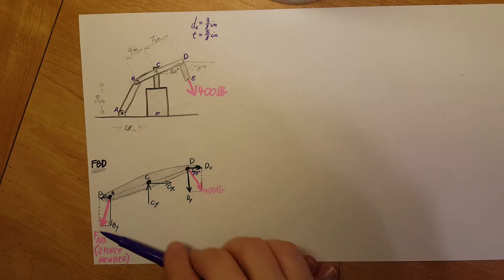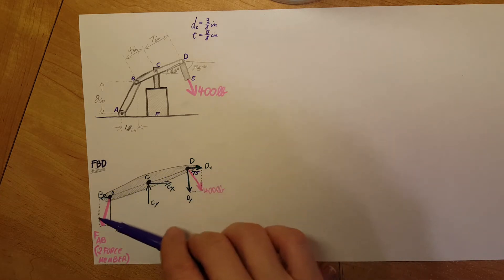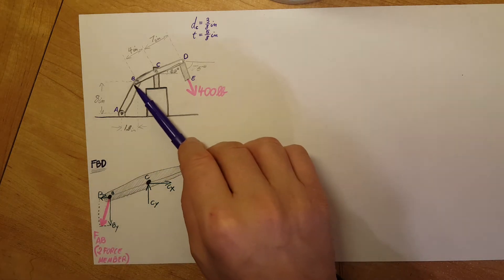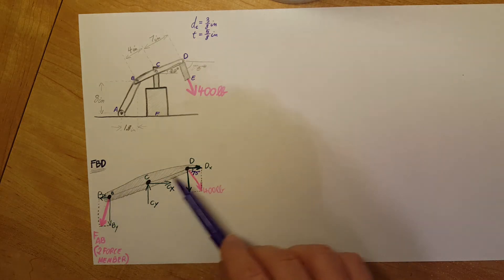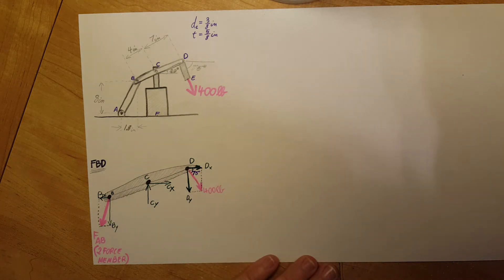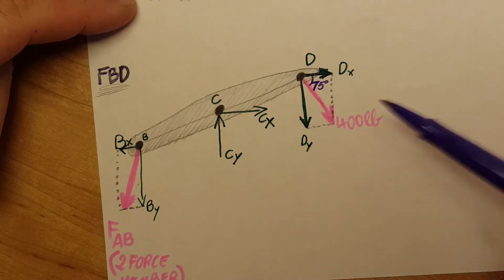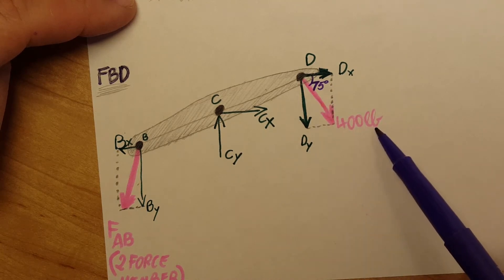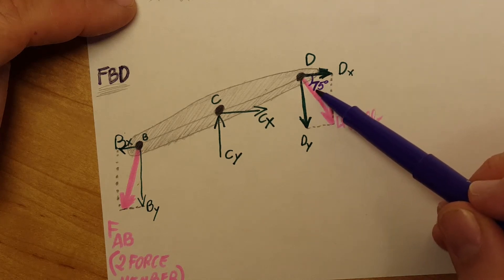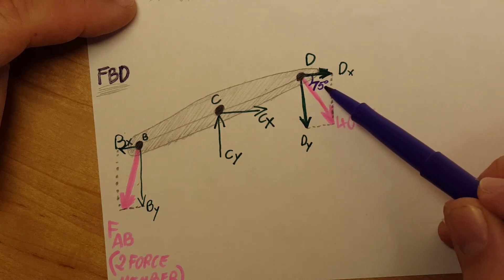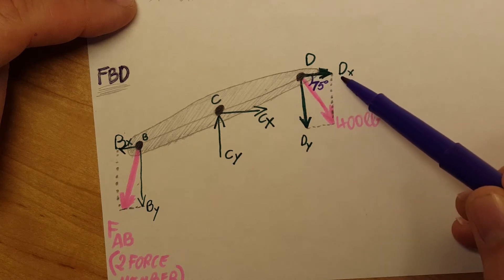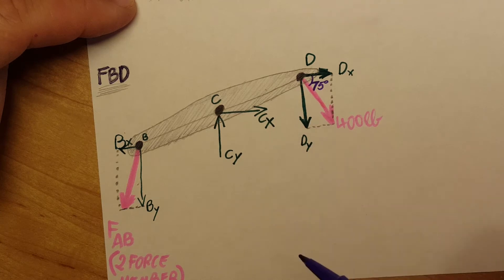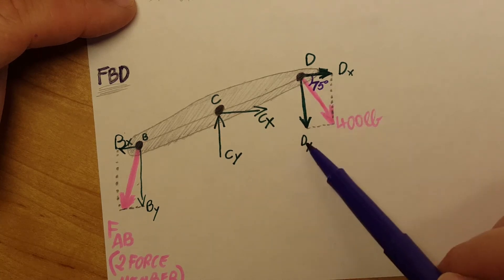Here is the free body diagram — I broke it out and created it separately just for the piece BCD. At point D we have our 400 pound force, and we know that it is at an angle of 75 degrees with the horizontal. So we're going to break it up into horizontal and vertical components, which I'll call DX and DY.